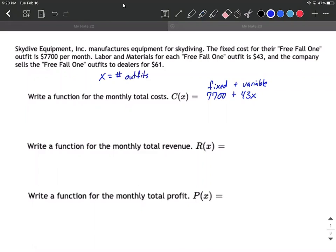X equals the number of outfits. I'm using X even though it wasn't defined in the word problem itself. You can see that this is the cost, C of X. So X is going to represent the number of outfits. Next up, we want to formulate the revenue, the total revenue, R of X.